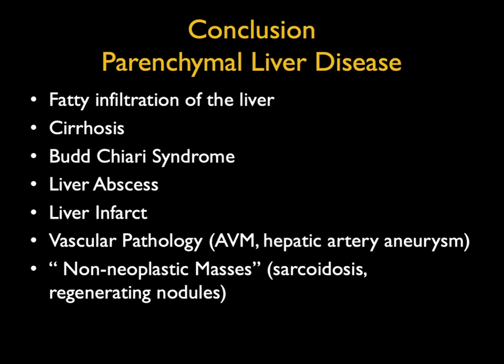Over these three talks, we've covered a wide range of topics: fatty infiltration of the liver, cirrhosis, challenges with Budd-Chiari and regenerating nodules, the spectrum of abscesses and infarcts, vascular pathologies from aneurysms to pseudoaneurysms and venous aneurysms, and non-neoplastic disease. It's important to remember that parenchymal liver disease is very common — far more common than metastasis or primary tumors. We need to spend as much effort on parenchymal liver disease as on tumors. Conditions like steatosis and NASH are only going to increase in importance in coming years. Thank you very much for your attention and I hope you enjoy the series.